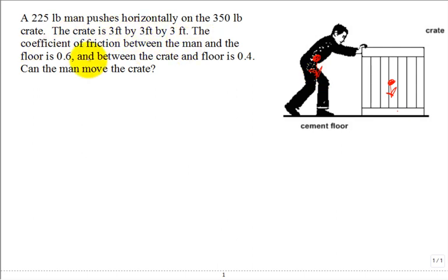The coefficient of static friction between the man and the floor is μs = 0.6, and between the crate and the floor is μs = 0.4. Can the man move the crate? Well, how is the man going to move the crate? Either by slipping or tipping. We need to check both.